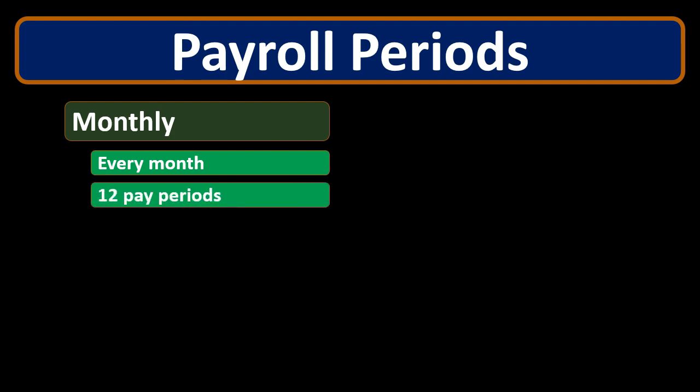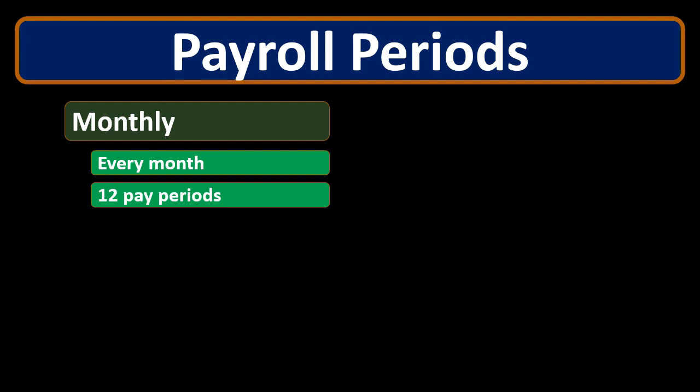There are going to be 12 pay periods because there are 12 months. So monthly is going to be an easier pay rate because there's only 12 pay periods — we can break it up fairly easily. However, most of the time employees would like to get paid more often than monthly.